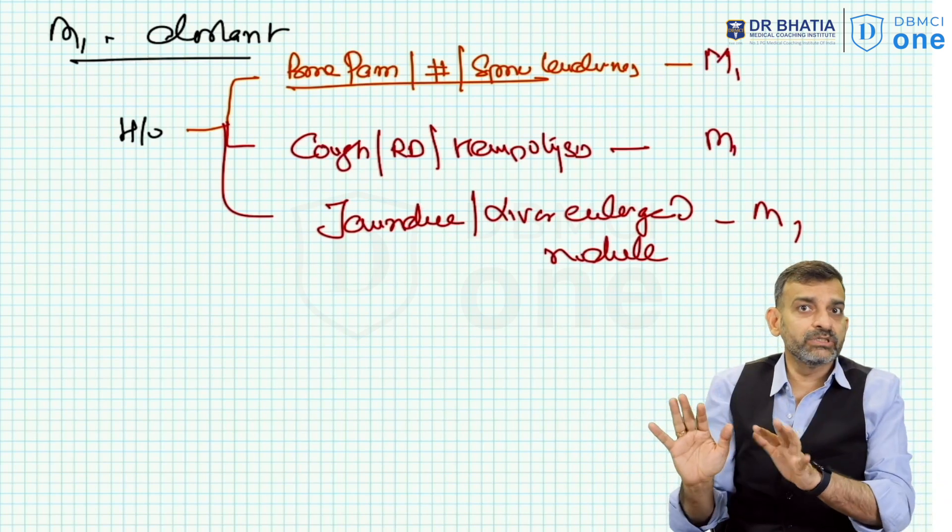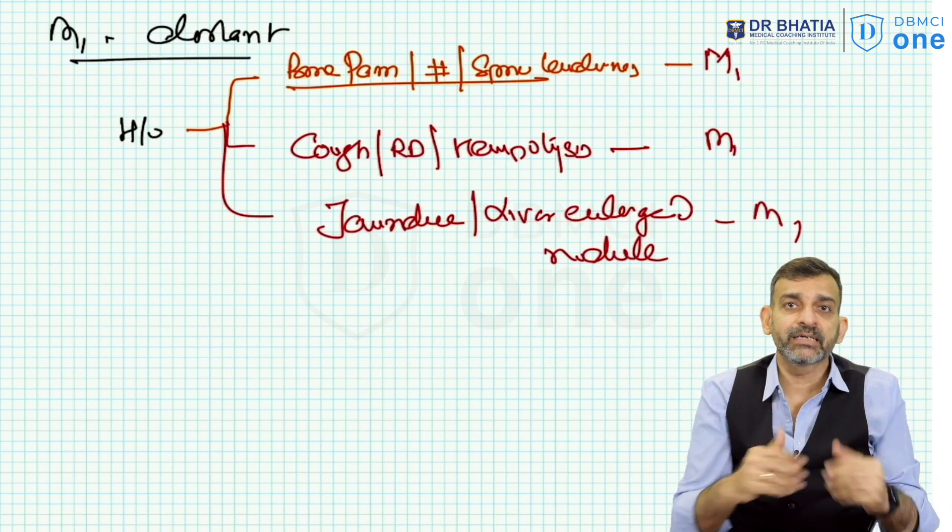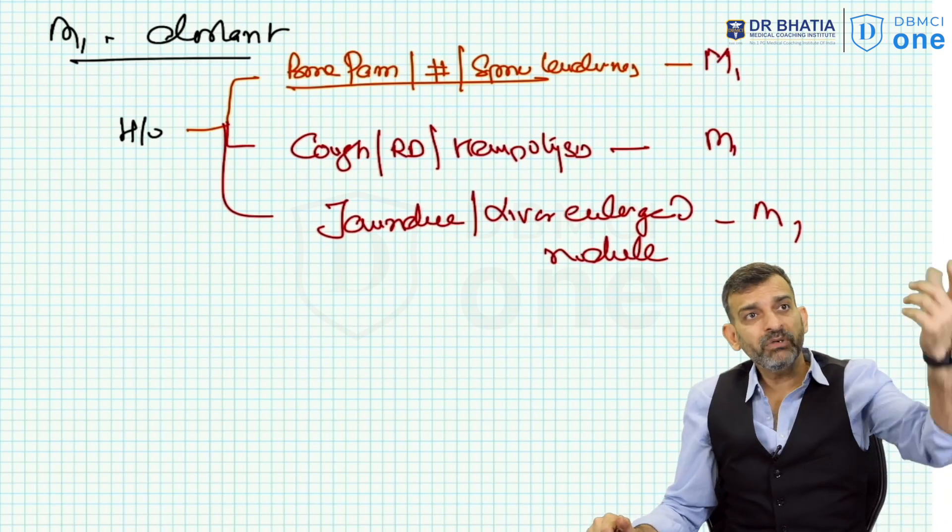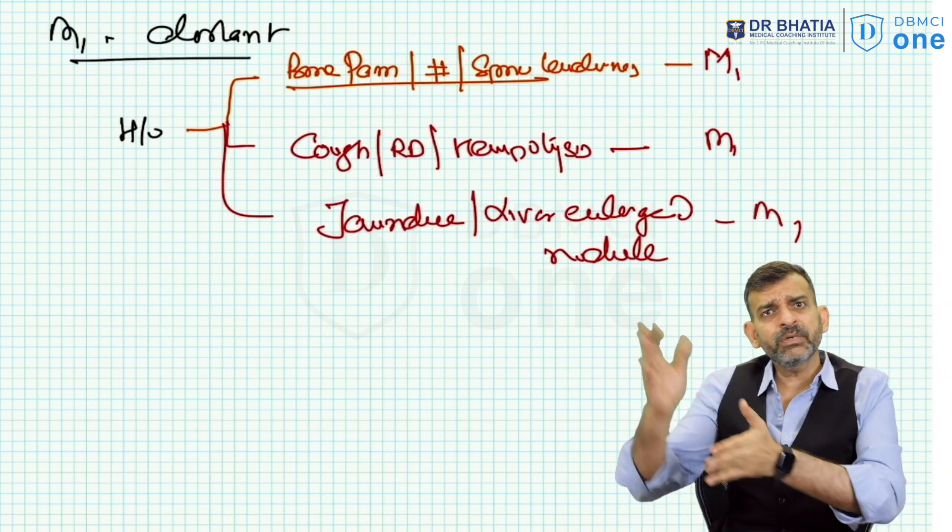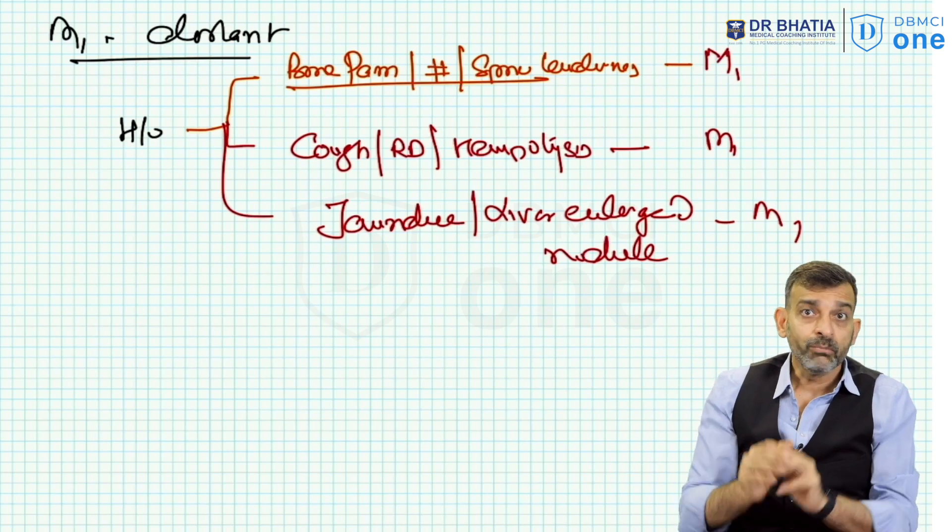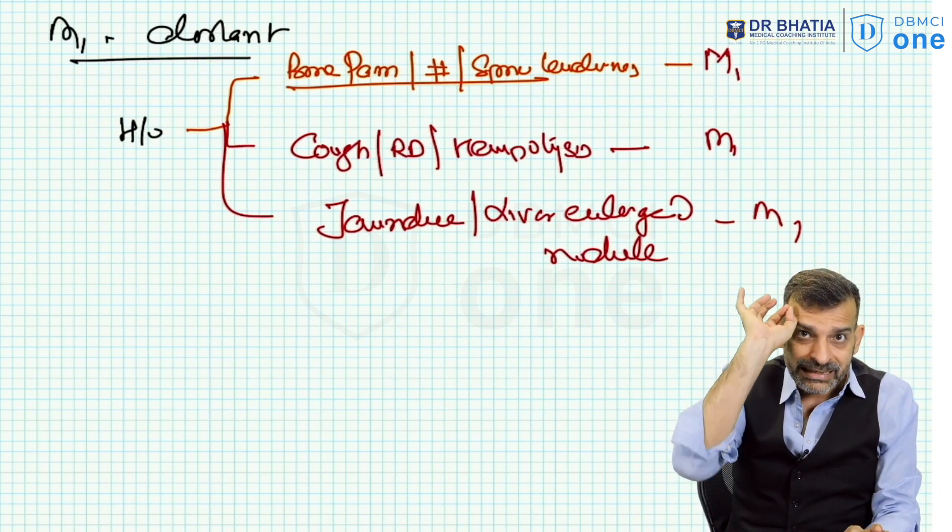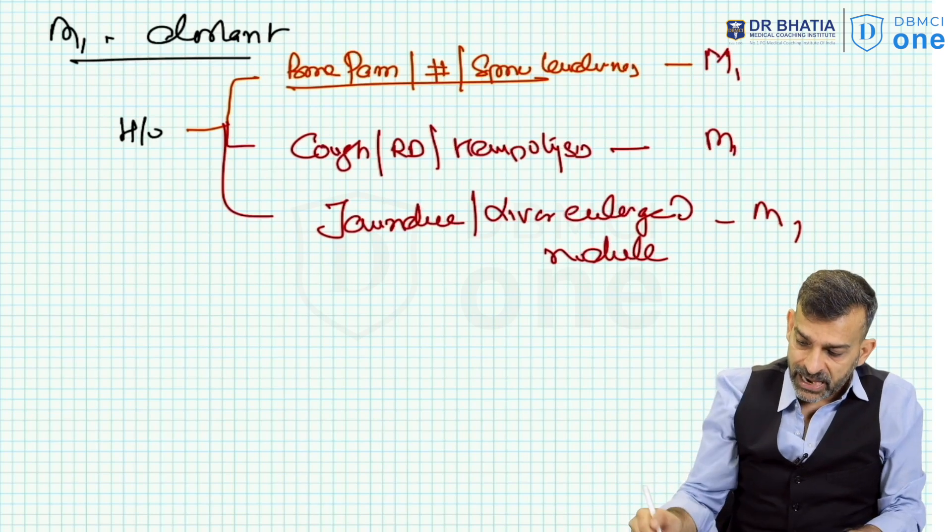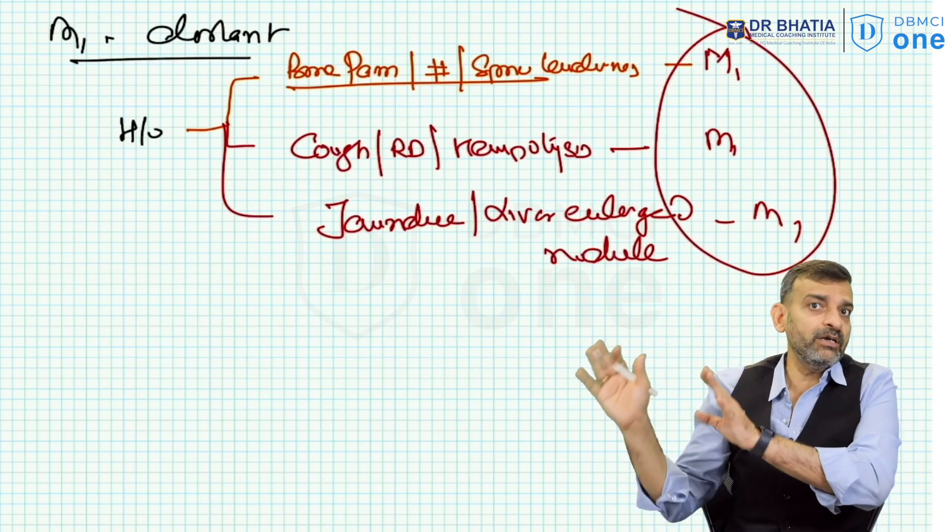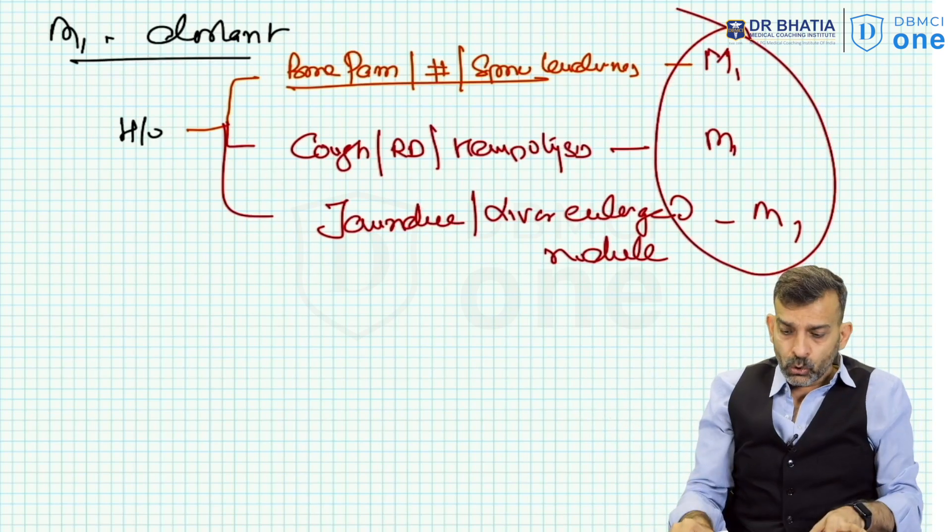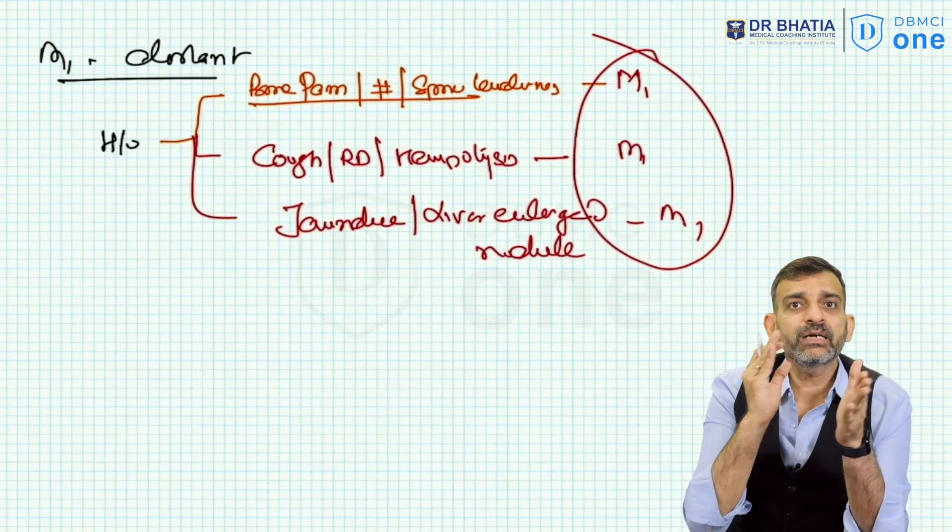Similarly, if the patient has a pathological fracture, it can be because of osteoporosis also, but I will not take it as that. I will take it as M1 disease. So I am initially taking it as M1. Now how my further evaluation will happen, you will get to see.